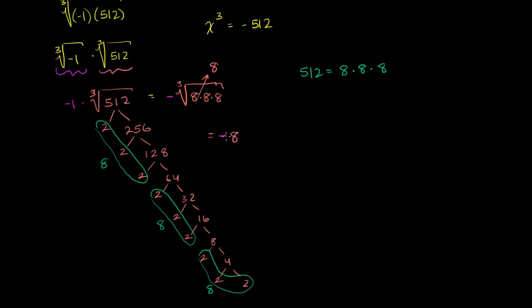And you can verify this. Multiply negative 8 times itself three times. Well, let's just do it. Negative 8 times negative 8 times negative 8. Negative 8 times negative 8 is positive 64. You multiply that times negative 8, you get negative 512.